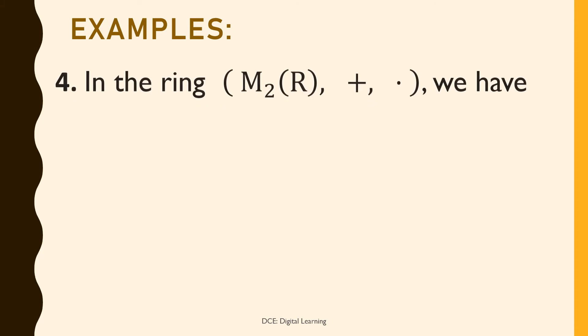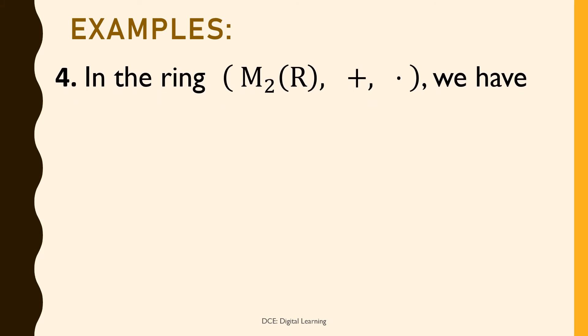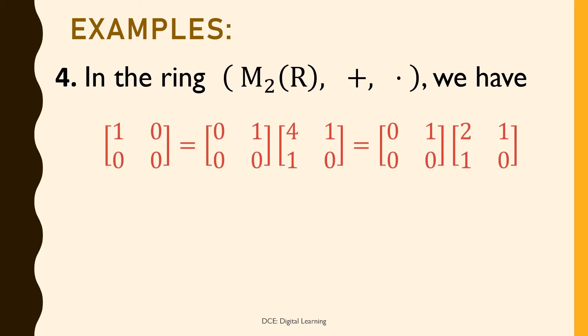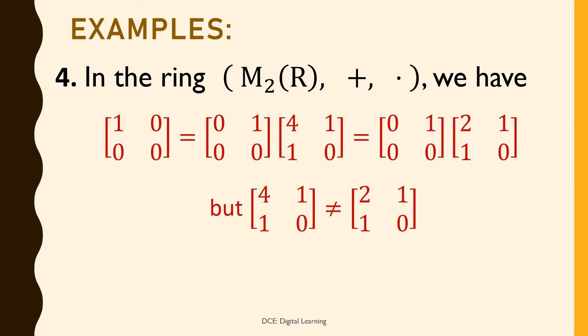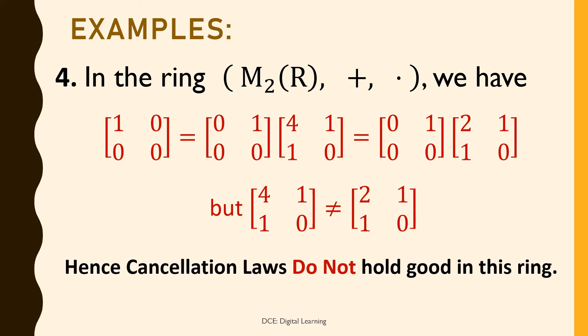Example 4: In the ring (M₂(R), +, ·) of 2×2 matrices, we have: the matrix [1 0; 0 0] times [0 1; 0 0] times [4 1; 1 0] equals [0 1; 0 0] times [2 1; 1 0], but [4 1; 1 0] ≠ [2 1; 1 0]. Hence cancellation laws do not hold good in this ring.